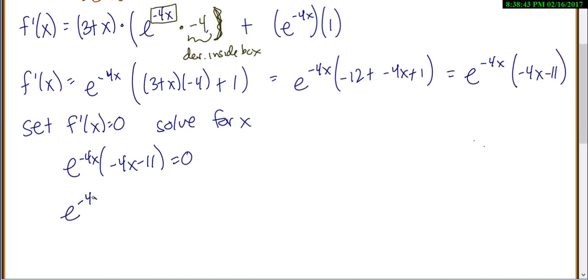So, e to the negative 4x equals 0, and negative 4x minus 11 equals 0. Now, e to the negative 4x can never be 0, because it's always positive. So that won't give us a solution. But negative 4x minus 11, that will give us...